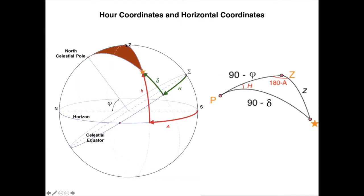If this is the zenith and this is the star, then this arc is the zenith distance, which is 90 minus the altitude. From the pole to the zenith is 90 minus the latitude of the place. Remember, from the north point to the North Celestial Pole is the latitude, so from the pole to the zenith is 90 minus the latitude.